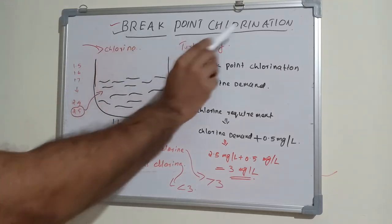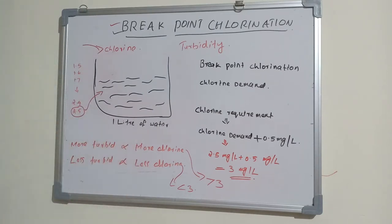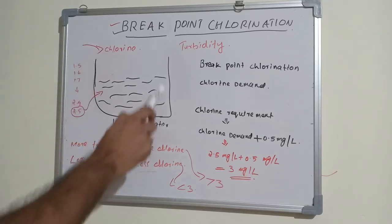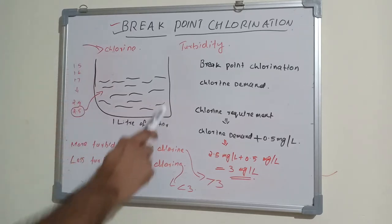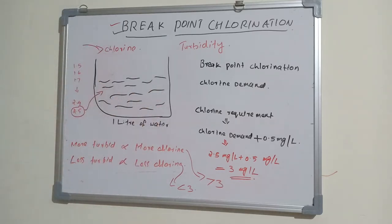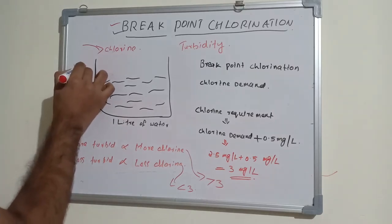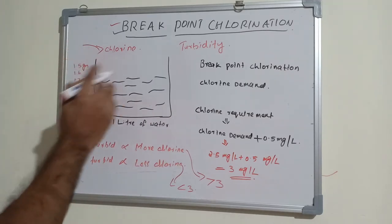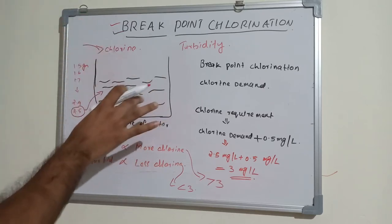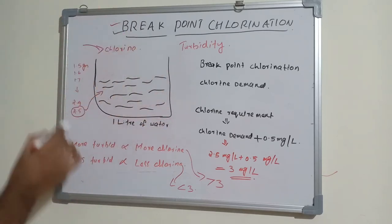Now let's see what breakpoint chlorination is. Suppose you take one liter of filtered water after the filtration step. You keep adding chlorine — which can be added by various methods: chloramine, HTH, or chlorine gas. We add incrementally, like 0.1 gram at a time, similar to a chemistry lab titration experiment, and observe what happens inside the one liter of water. We increase the amount and all of it gets dissolved, because that much chlorine is required to decontaminate all the bacteria and other pathogens.